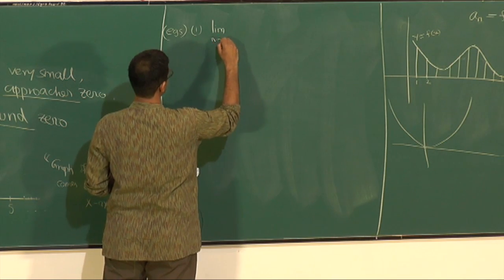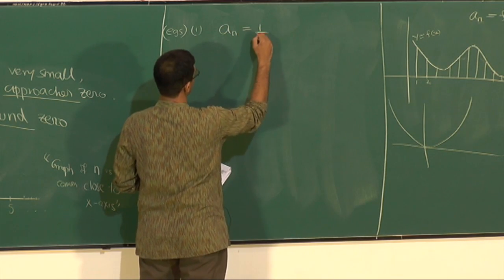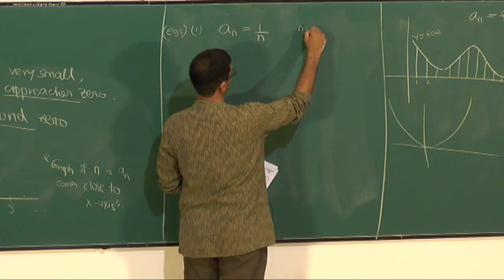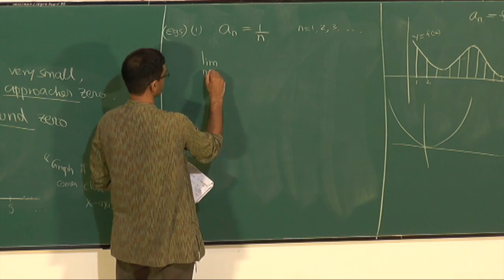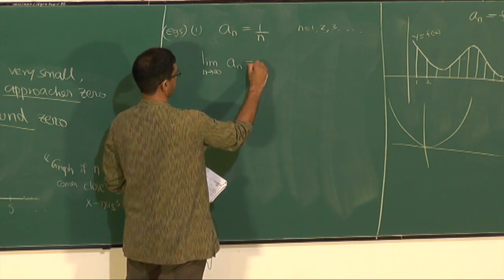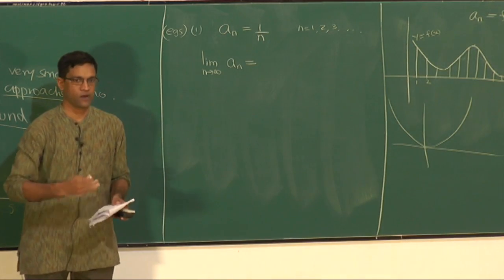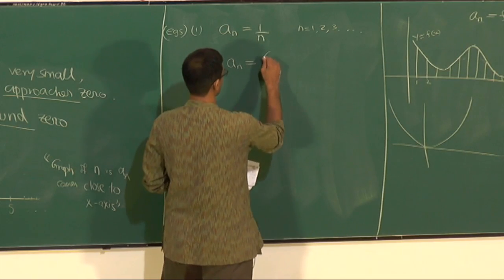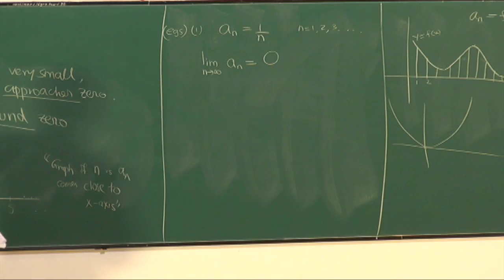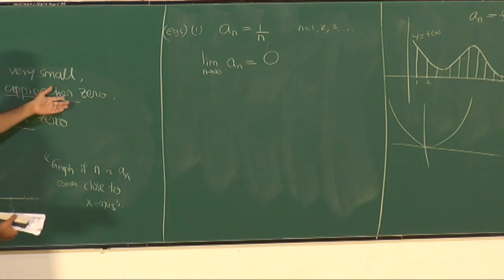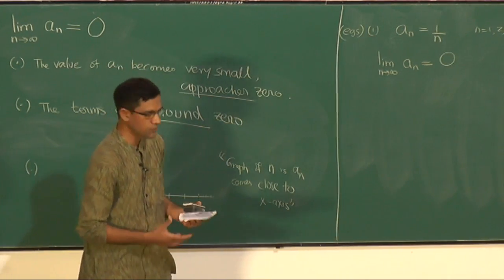Applying this notion to examples: for a_n = 1/n where n is 1, 2, 3, and so on, the limit is 0. The sequence 1, 1/2, 1/3, 1/4, and so on goes to 0. The value of a_n becomes very, very small — 1/n is becoming smaller and smaller, closer and closer to 0. So the terms are all around 0.